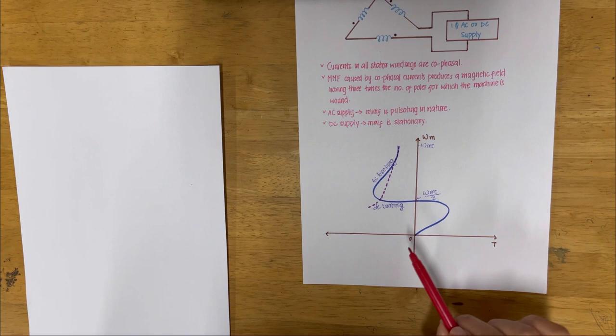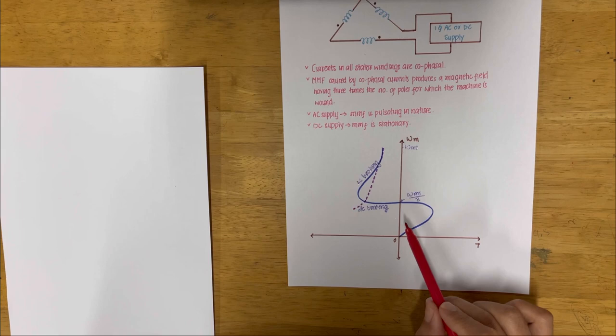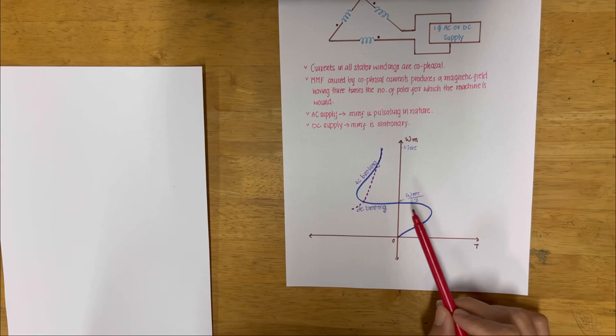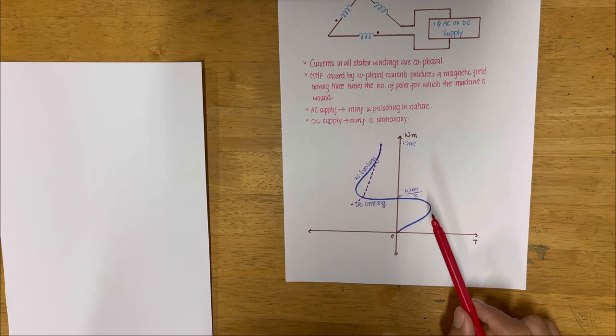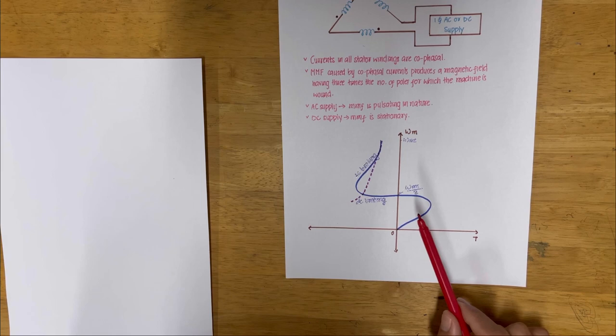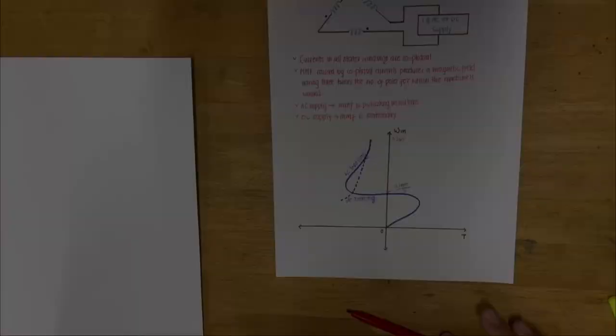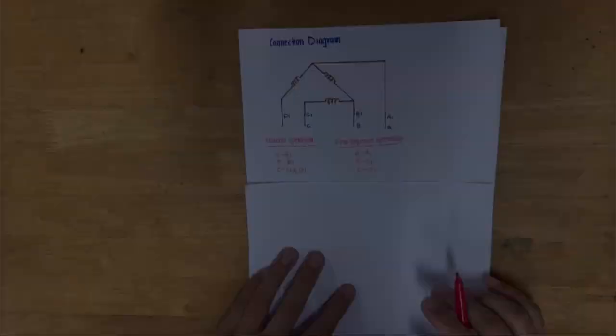With AC supply, braking can be used only up to one-third of synchronous speed. The braking torque produced by these connections is considerably larger than motoring torque. With DC supply, braking is available over the entire speed range. This braking is essentially dynamic braking, as all the generated energy is wasted in rotor resistance.